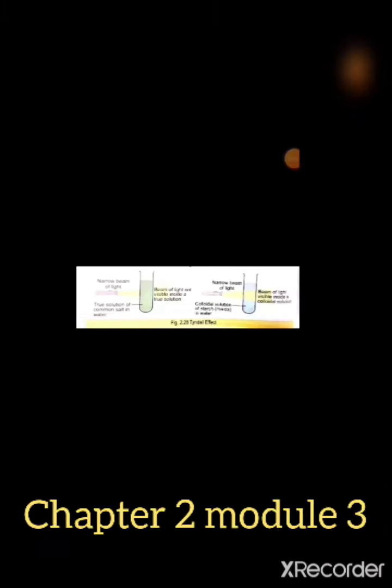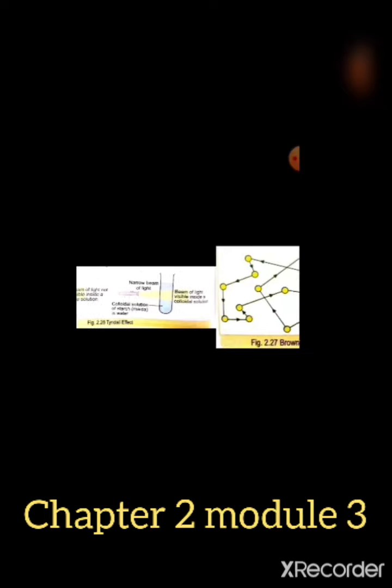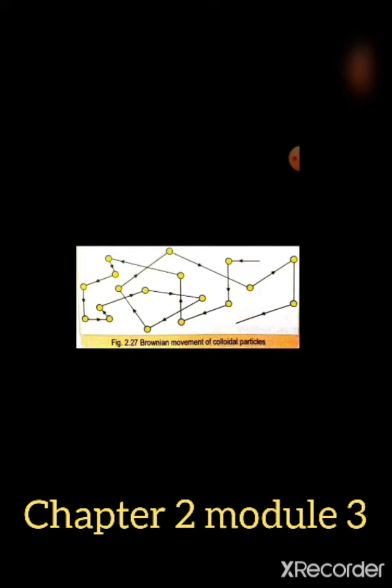You can see the Tyndall effect here: the first test tube contains a true solution of common salt in water. When a narrow beam of light passes through it, the beam is not visible inside the solution. In the second test tube, a colloidal solution of starch in water is taken, and when a narrow beam of light is passed through it, the beam is visible due to scattering by colloidal particles. The particles of the true solution are too small to scatter light. Next, the Brownian movement of colloidal particles is shown — the zigzag random motion of colloidal particles is known as Brownian movement.